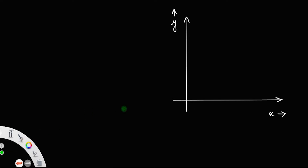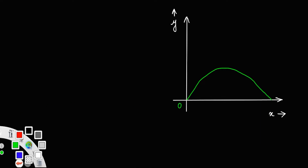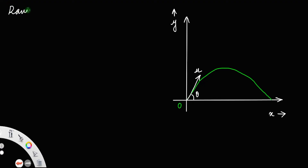Let us consider a projectile projected from point O. Let this green path be the trajectory of the projectile. Let its initial velocity, or the velocity of projection, be u and theta be the angle of projection. In this video, we are going to discuss the range of the projectile. The range basically means the maximum horizontal distance covered by the projectile — suppose this point is P, then the length OP is called the range of the projectile, represented by R.